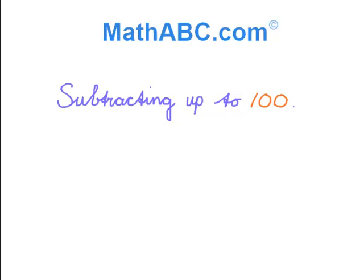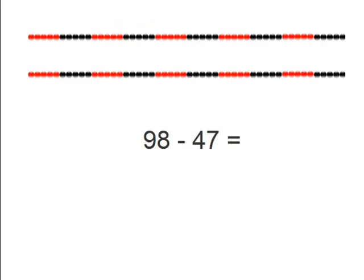Subtracting up to 100. We are going to do subtraction up to 100. We see the problem 98 minus 47. For each of these problems I'll show you three ways of solving it. We will use the string of beads, by which a number is split up, and in which numbers are rounded to the nearest ten. So let's first take a look at the string of beads.